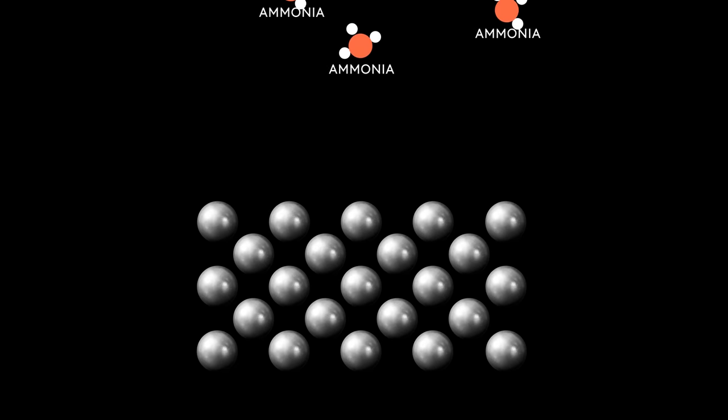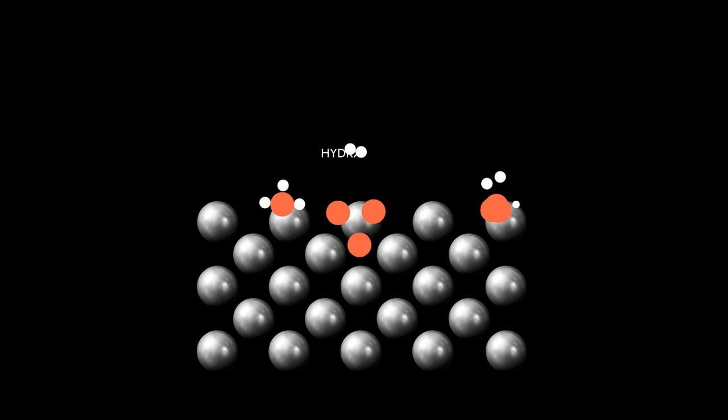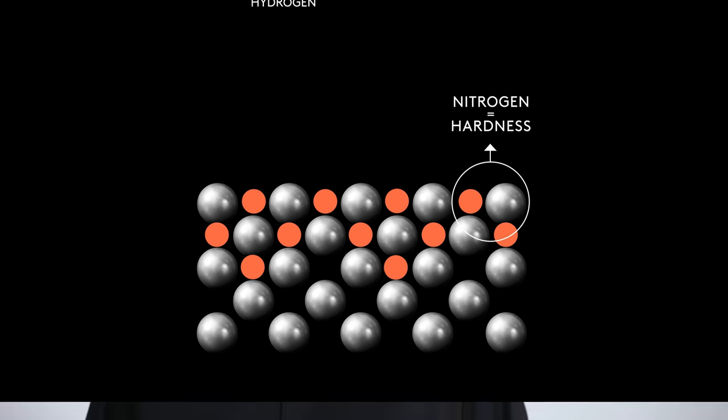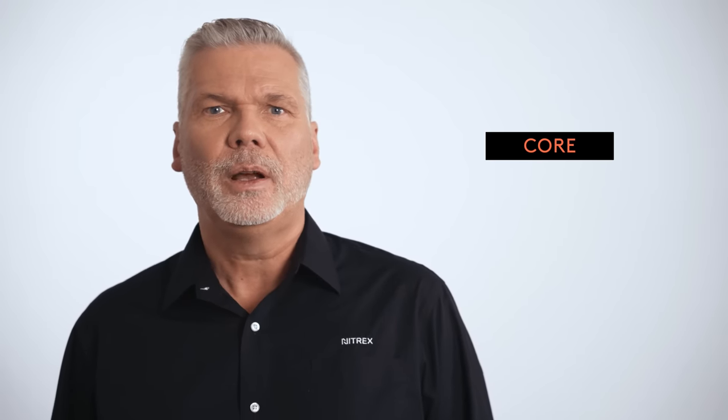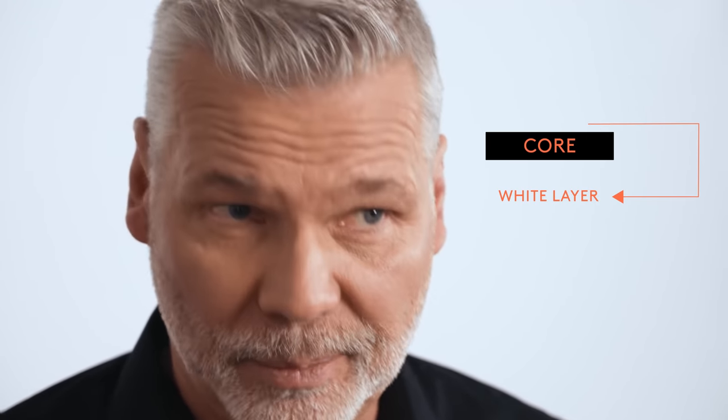Nitriding and nitrocarburizing processes derive from the same catalytic reaction where ammonia dissociates and atomic nitrogen is absorbed into steel and iron surfaces. Nitrogen diffusion contributes compressive stresses which we perceive as hardness. Similar to inflating a tire, we place more atoms in the same defined volume, but at one point we need to stop inflating or something unwanted will happen.